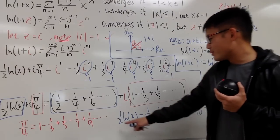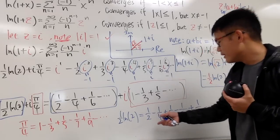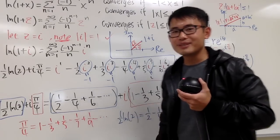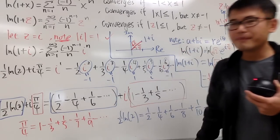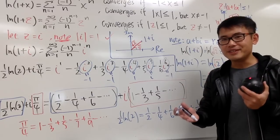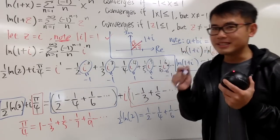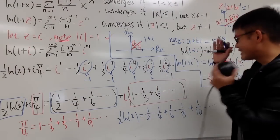So we get two really cool identities: the alternating series with all odd numbers in the denominators gives pi over 4, and the alternating series with all even numbers gives 1 half ln 2. Hopefully you guys like this video. Please subscribe — your subscription is my motivation to make more videos for you guys.